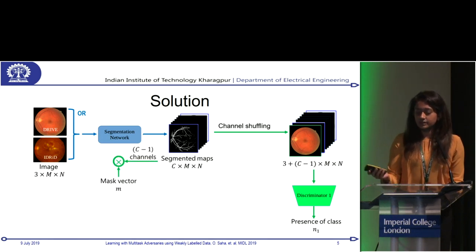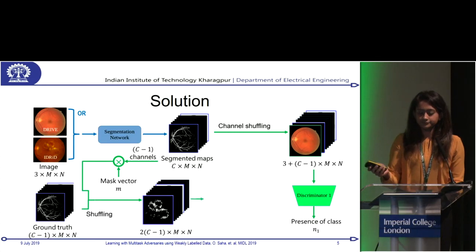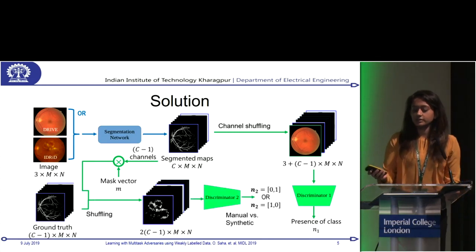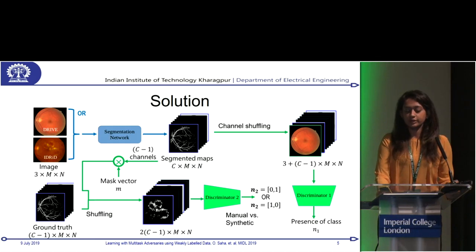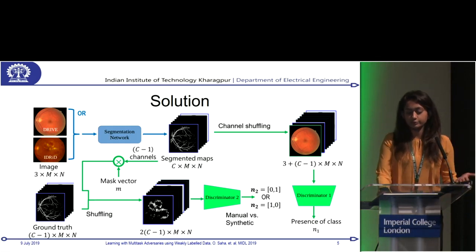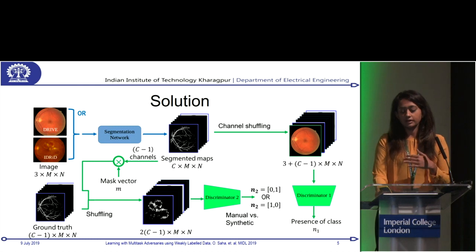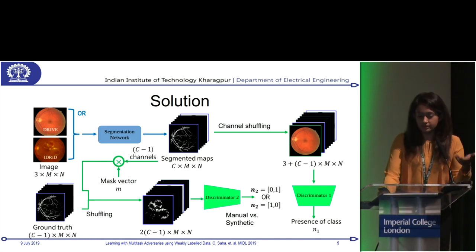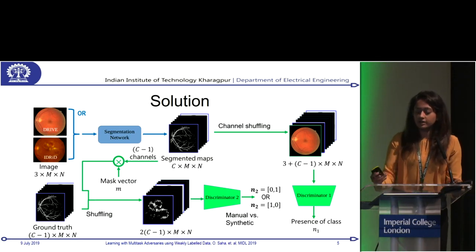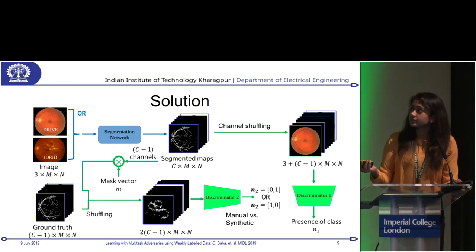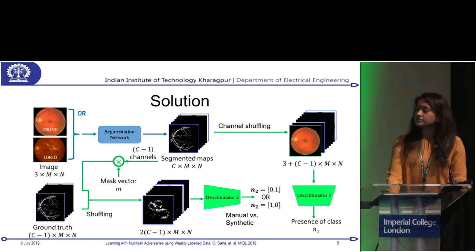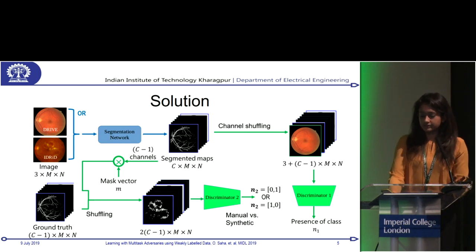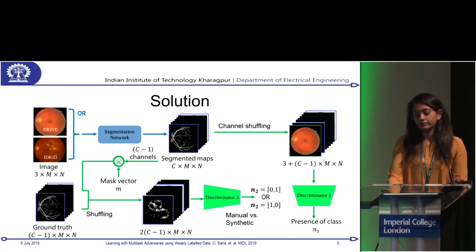The next discriminator masks the segmented maps with respect to the ground truth we have — that is, we mask those channels which are not annotated in the respective dataset. We then do a shuffling and feed it to Discriminator 2, which is the traditional real versus fake discriminator. It tells me whether the input is manual or synthetic.